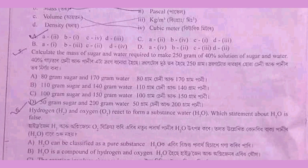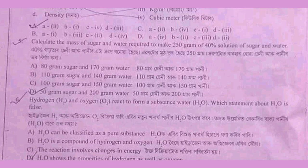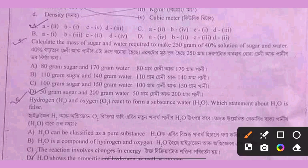The first question: calculate the mass of sugar and water required to make 250 grams of 40% solution of sugar and water. 40% of 250 grams is 40 divided by 100 into 250 grams, which gives 100 grams of sugar.